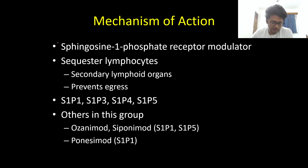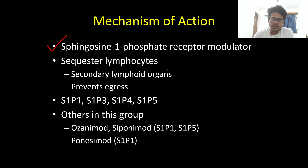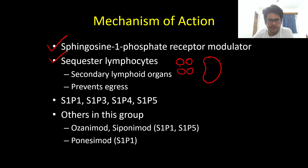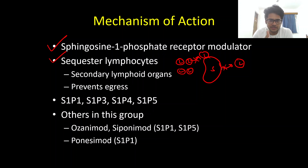Coming to the mechanism of action, Fingolimod acts on the sphingosine 1-phosphate receptor and predominantly acts as a receptor modulator. The mechanism of action is that it sequesters lymphocytes. It acts on the sphingosine 1-phosphate receptor present on secondary lymphoid organs like the lymph nodes and spleen, and prevents the egress of lymphocytes from these organs, thereby decreasing their presence in the central nervous system.